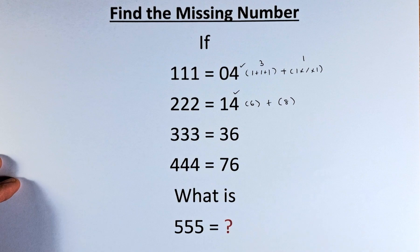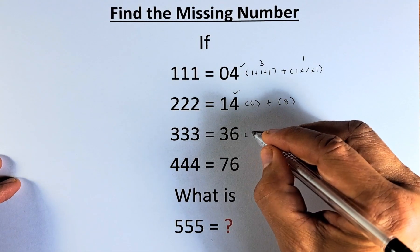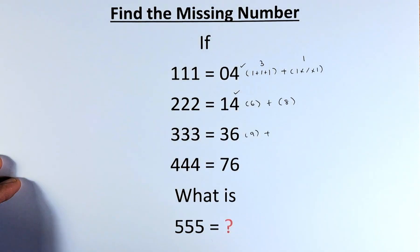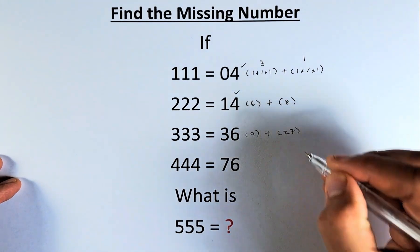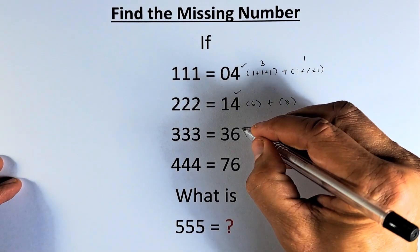333 equals 36, same principle. 3+3+3 is 9, 3×3×3 is 27. So 9+27 gives us 36.